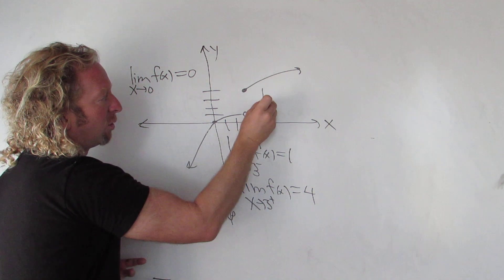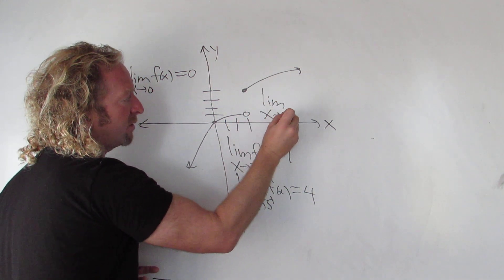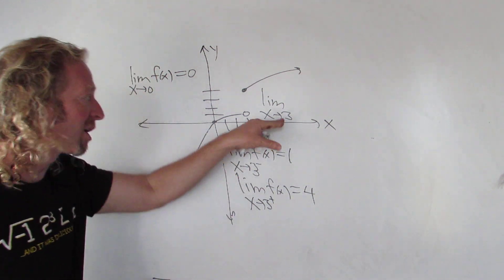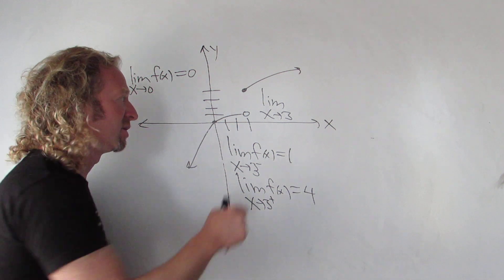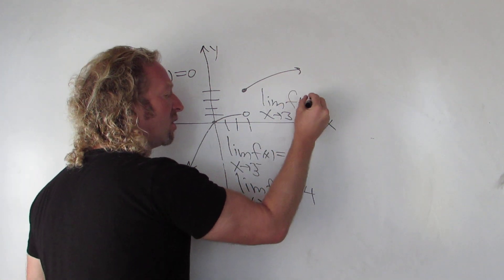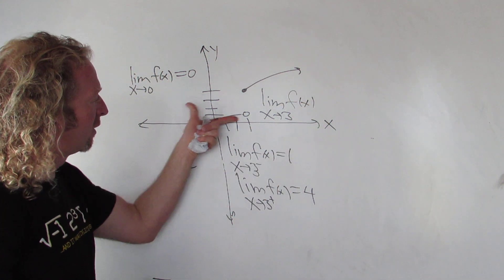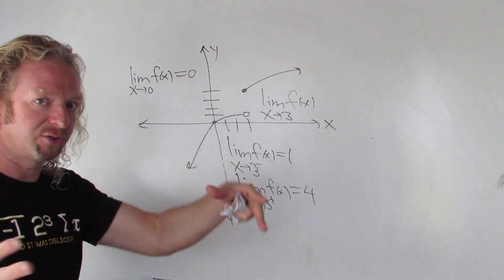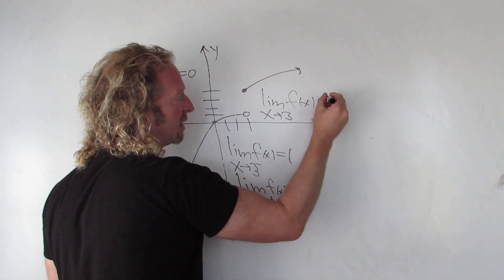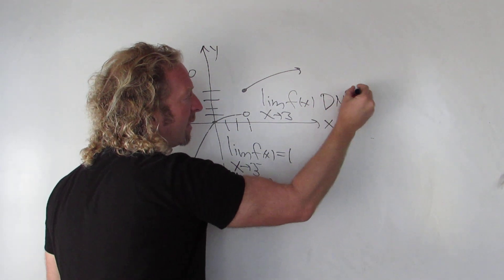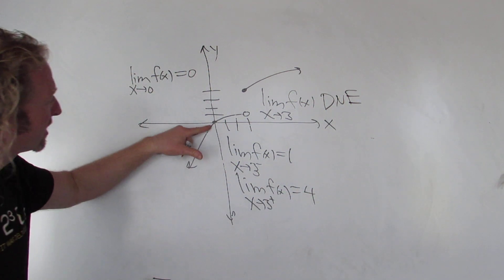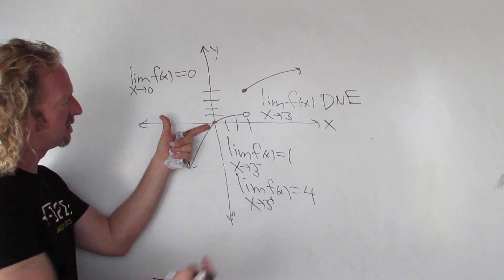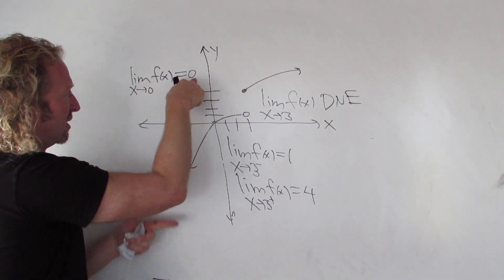So what does that mean in terms of the regular limit? These are called one-sided limits, and the regular limit is a two-sided limit — it means from both directions. As x approaches 3, from the left we get 1 and from the right we get 4. Therefore we get no consistent answer, so we say the limit does not exist, or DNE.